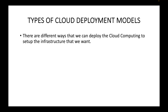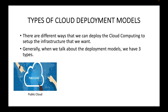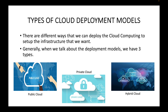Generally, whenever we talk about cloud computing, there are different ways that you can deploy it to set up the infrastructure that you want. When we talk about cloud deployment models, there are three main deployment models available: the public cloud deployment model, the private cloud deployment model, and the hybrid cloud deployment model. Depending on your use case and your requirement, you can choose which deployment model you want to use.